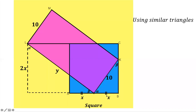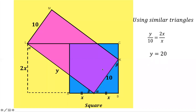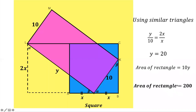So Y divided by 10 equals 2X divided by X. The X cancels, so Y equals 20. The area of the rectangle is length times breadth, which is 10 times Y, and since Y is 20, the area is 200. I hope you got it correct.